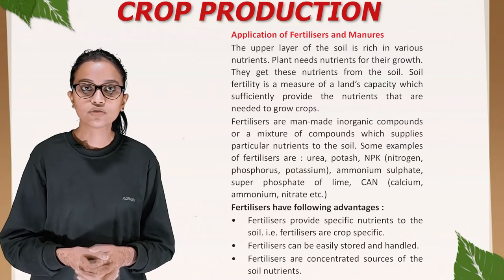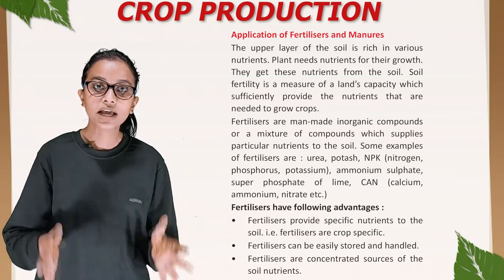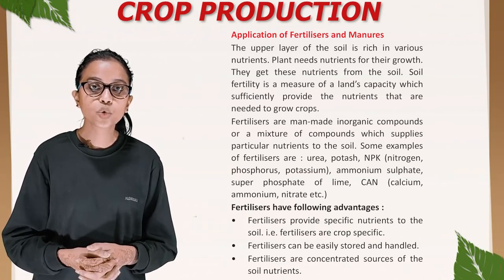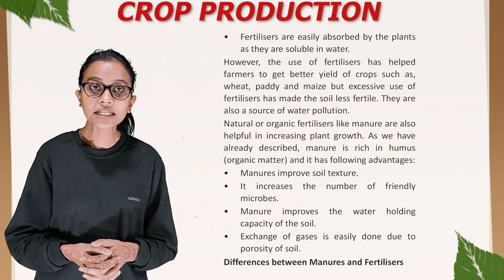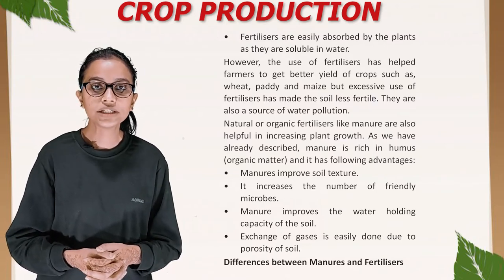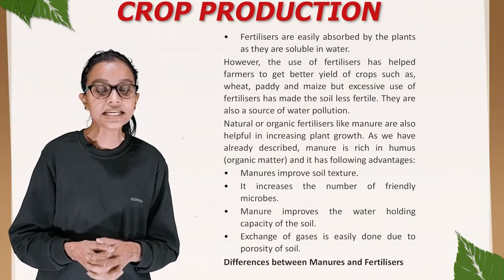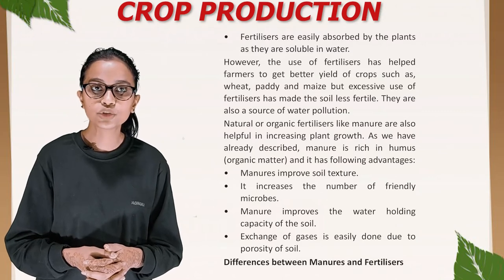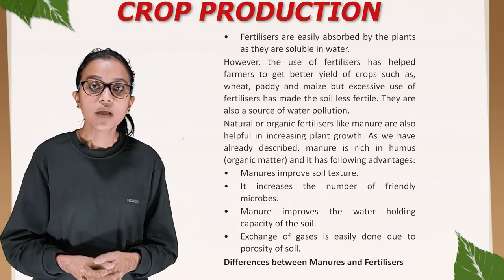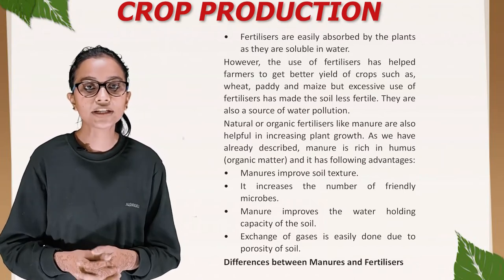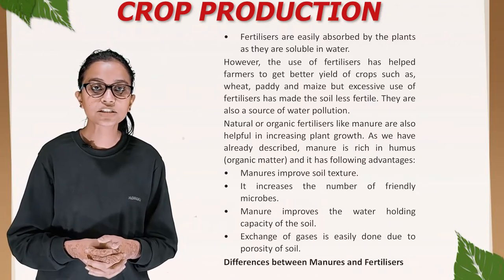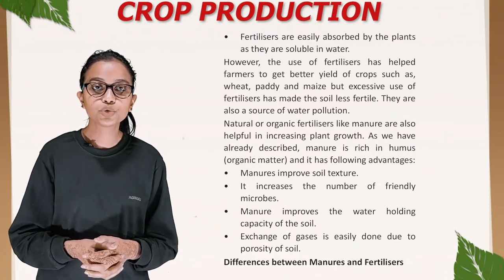Fertilizers have the following advantages: they provide specific nutrients to the soil (i.e., they are crop specific); they can be easily stored and handled; they are a concentrated source of soil nutrients; and they are easily absorbed by plants as they are soluble in water. However, excessive use of fertilizers has made the soil less fertile and is also a source of water pollution. Natural and organic fertilizers like manure are also helpful. Manure is rich in humus (organic matter) and has advantages: it improves soil texture, increases the number of friendly microbes, improves water-holding capacity of the soil, and allows easy exchange of gases due to soil porosity.